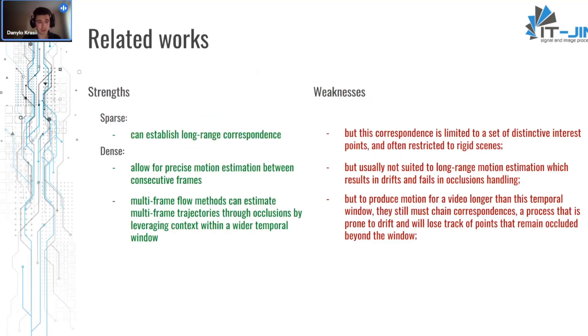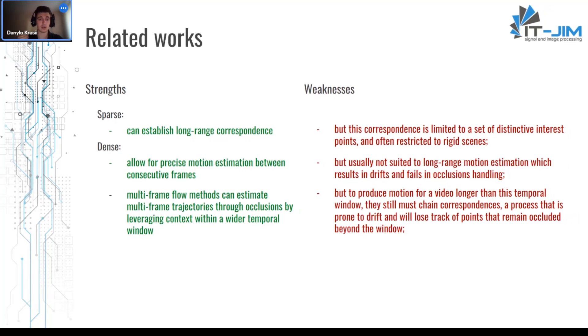Existing methods have a lot of strengths and also some weaknesses. For sparse methods, the strength is that they can establish long-range correspondence and they work pretty fast, but this correspondence is limited to a set of distinctive interest points and often restricted to rigid scenes. As for dense optical flow, the methods allow for precise motion estimation between consecutive frames, but usually not suited for long-range motion estimation, which results in drift and fails in occlusion handling.